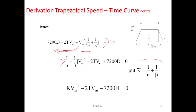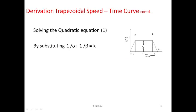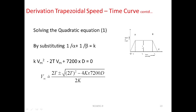Substituting the K value, the equation becomes K·Vm² minus 2T·Vm plus 7200D = 0. Solving this quadratic equation using the standard formula x = (−B ± √(B²−4AC)) / 2A gives: Vm = [2T ± √(4T² − 4K × 7200D)] / 2K, which simplifies to Vm = [T ± √(T² − 7200KD)] / K.